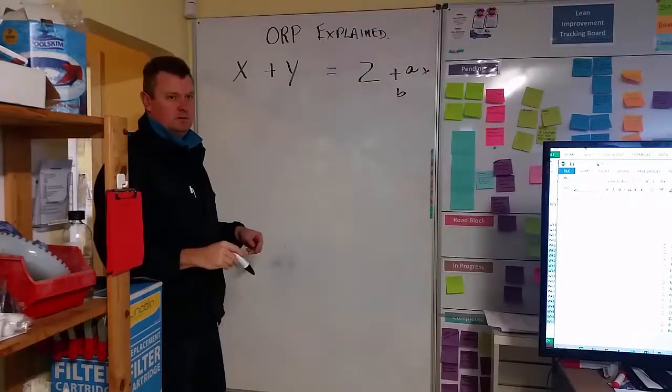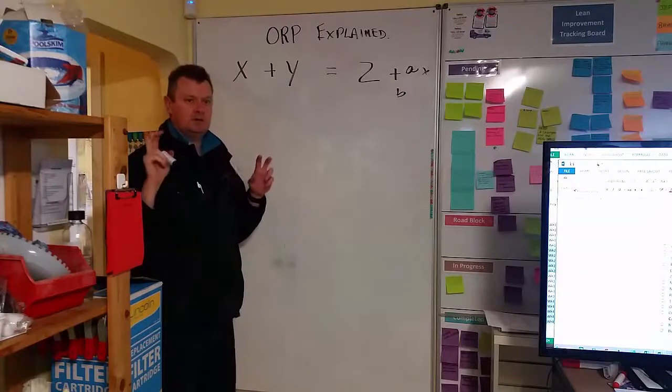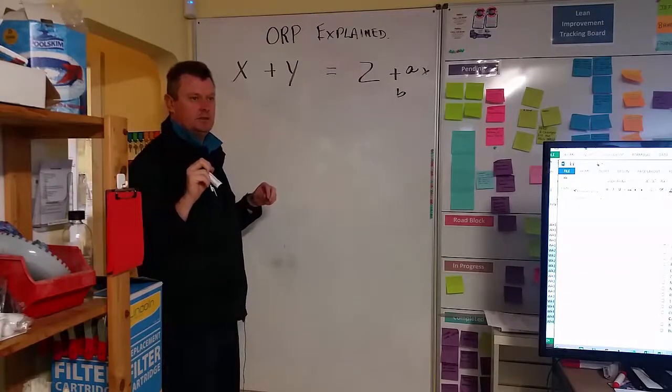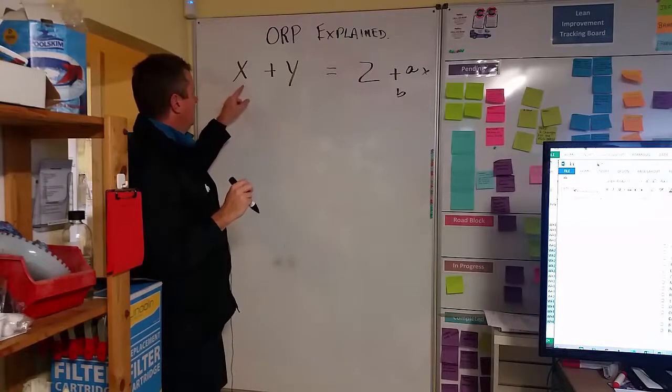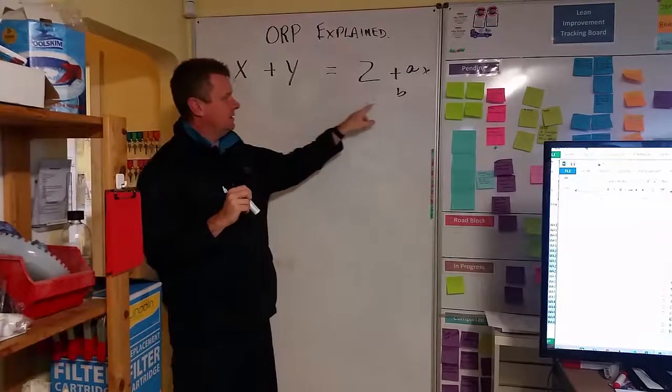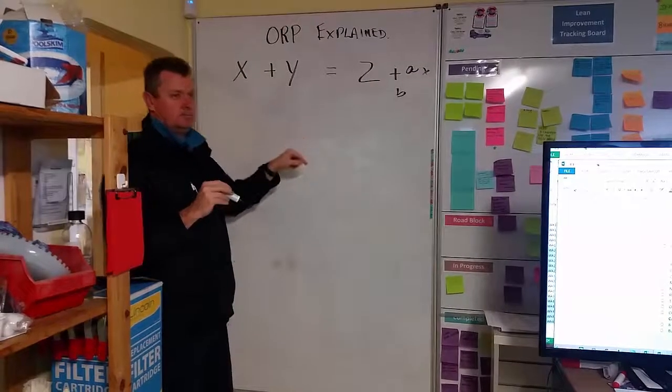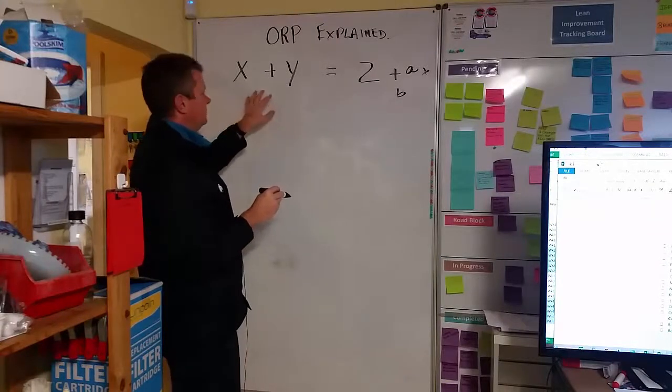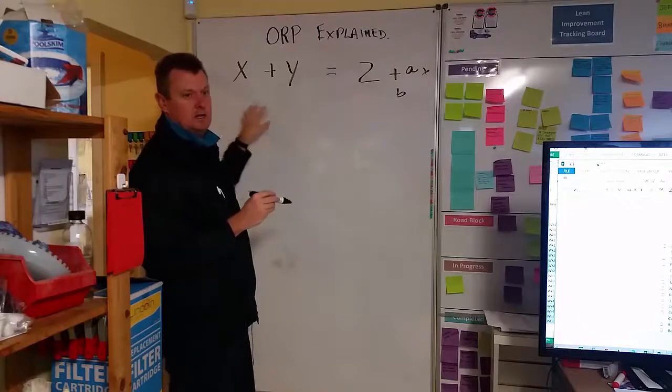So the reaction that happens with chlorine, you've heard it's called an oxidizer. Chlorine is an oxidizer. A ruster, basically, ruster's oxidization. So that's the oxidation side, and then that's the reduction side. So that's what it is. We always talk about chlorine here, but the actual chemical reaction is both oxidation and reduction.